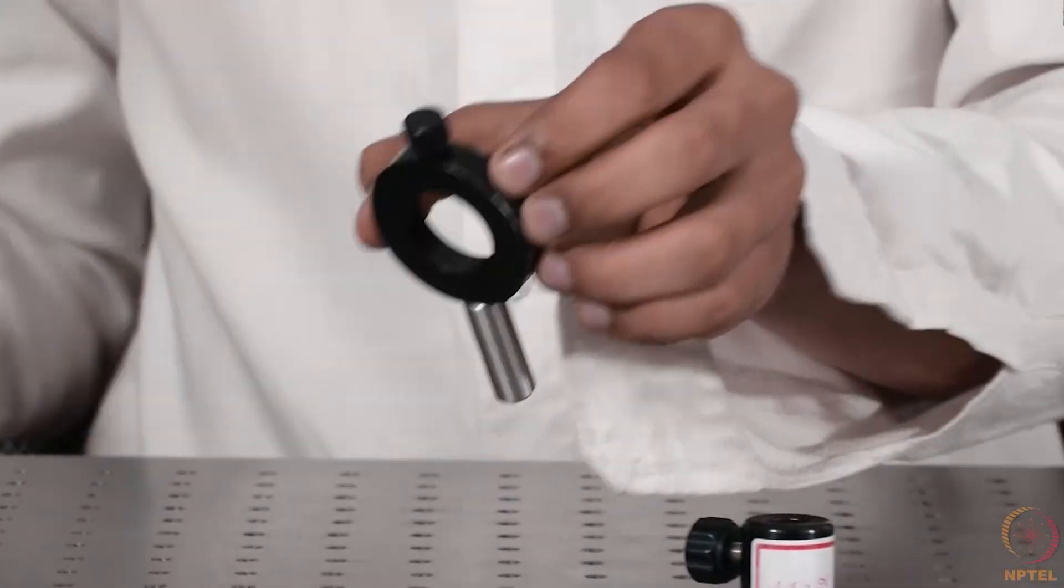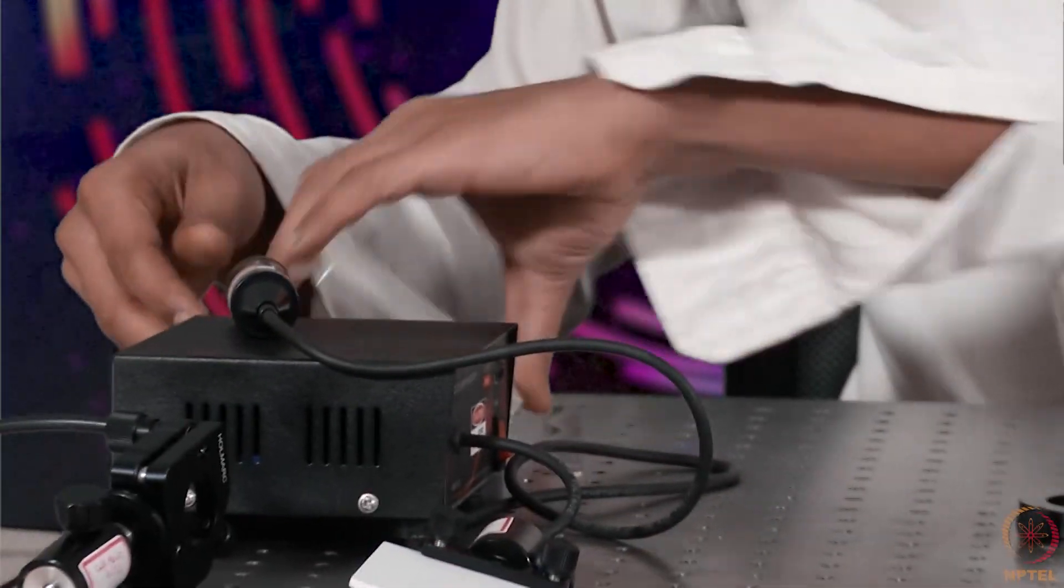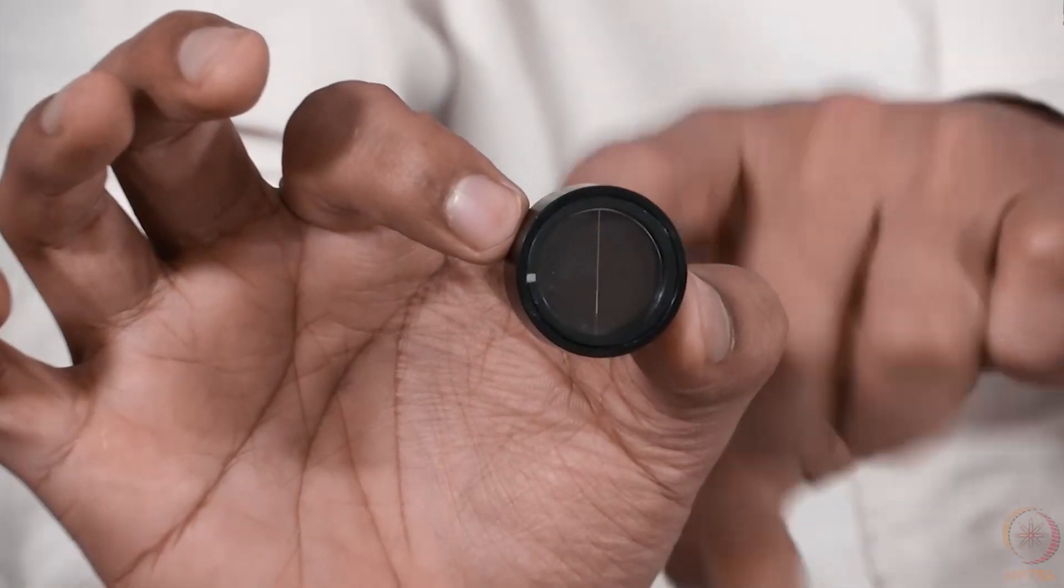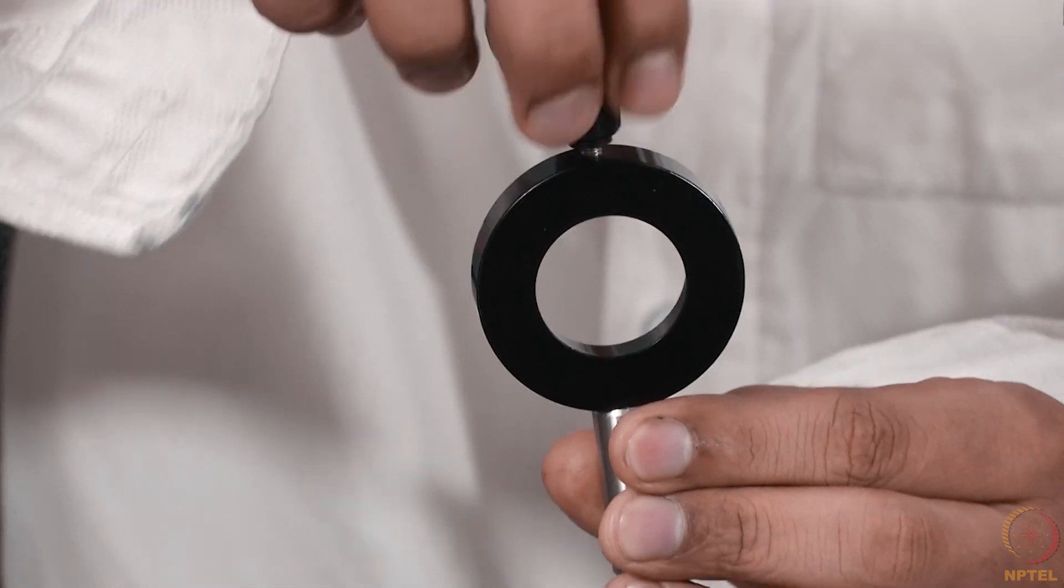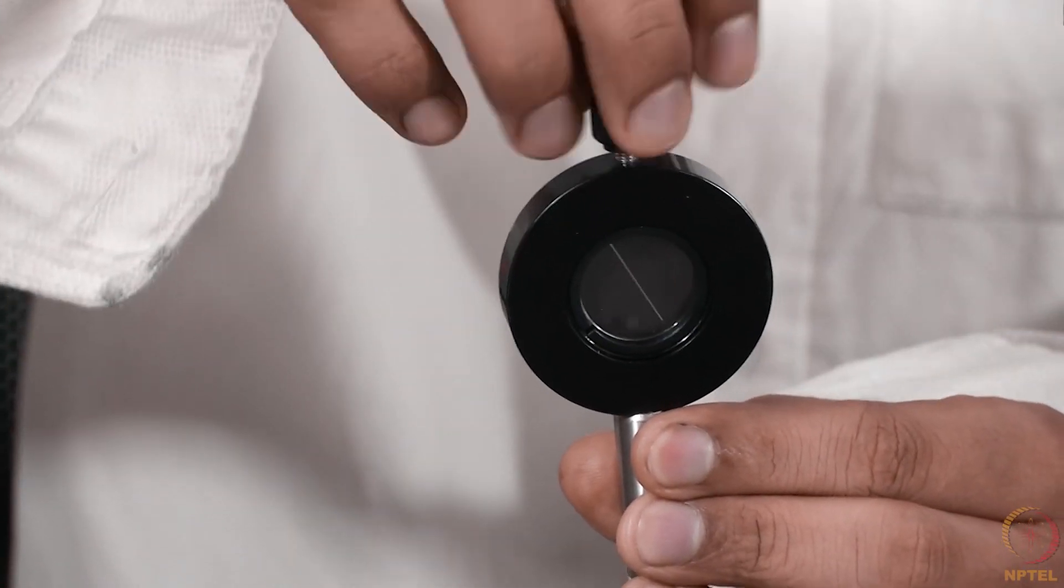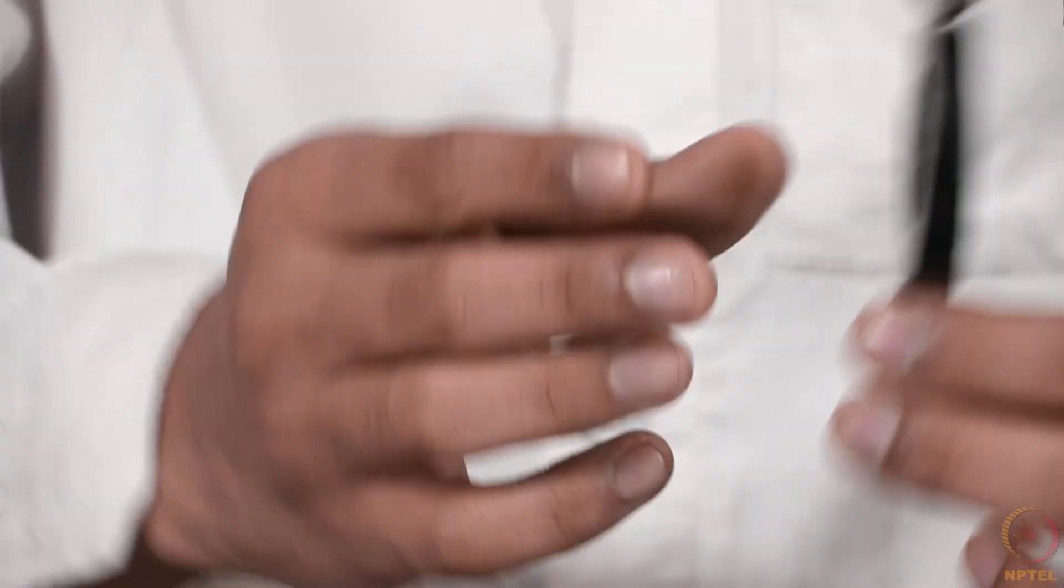Basically I have few diffraction cells here. This is a diffraction cell. It has one small slit in between. It goes and fits into this. And then you can tighten it. Now you can put it on the mount.